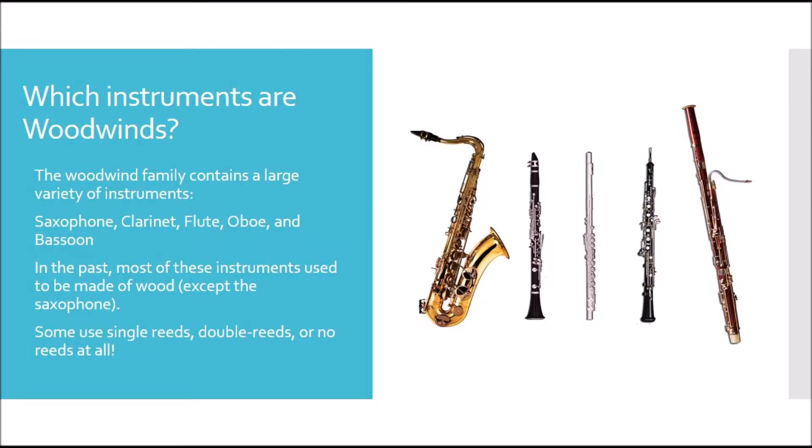The first question we're going to be talking about is which instruments are considered woodwinds. The woodwind family does contain a large variety of instruments. In the image on the right, from left to right, we'll see a saxophone, a clarinet, a flute, an oboe, and a bassoon.